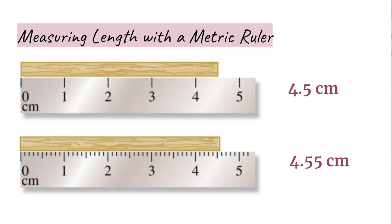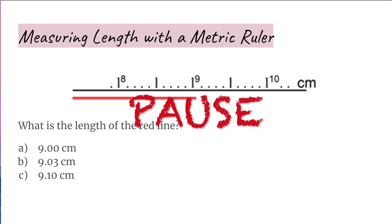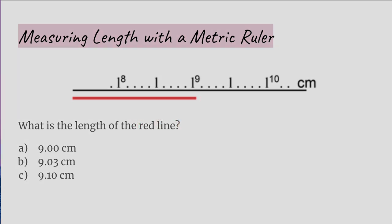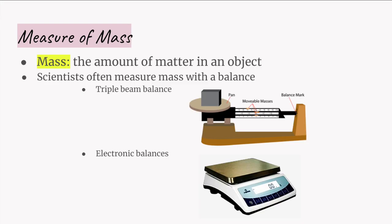Can you determine the length of the red line in centimeters? Note that there are 10 millimeters between each centimeter, meaning each individual line represents 0.1 centimeters. Since this goes to the tenths place (0.1), we can estimate one space further to the hundredths place. Pause this video before continuing. The best answer is B: 9.03 centimeters.